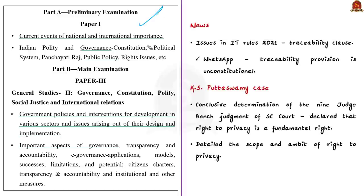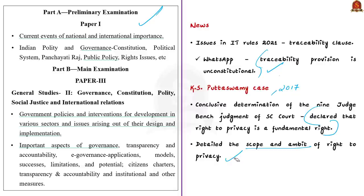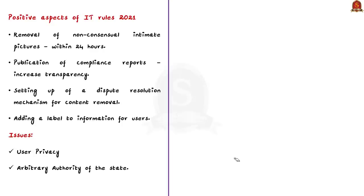There are positive aspects about the IT rules, but also equally glaring ambiguities and unclear provisions. While challenging the government, WhatsApp has invoked the 2017 Justice K.S. Puttaswamy versus Union of India case law, arguing that the traceability provision is unconstitutional and against people's fundamental right to privacy — a right which the Supreme Court underlined in its 2017 judgment. The rules must be credited for mandating removal of non-consensual intimate pictures within 24 hours, publication of compliance reports to increase transparency, setting up of a dispute resolution mechanism for content removal, and adding labels to information so users know whether content is advertised, owned, sponsored or exclusively controlled.